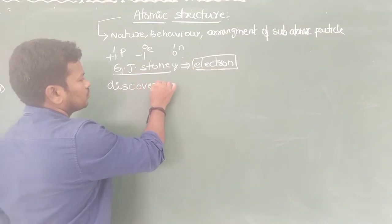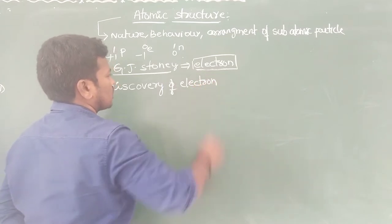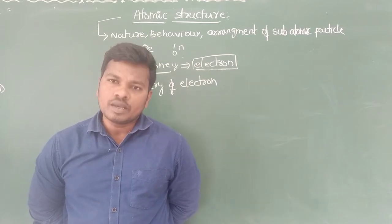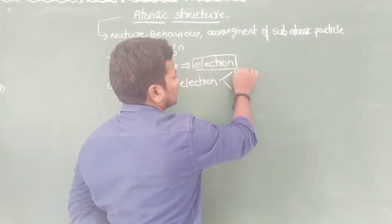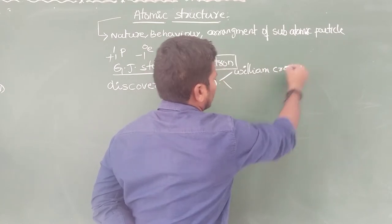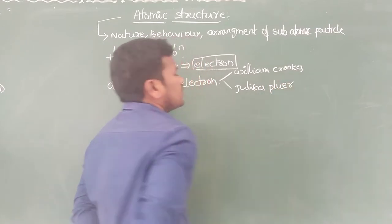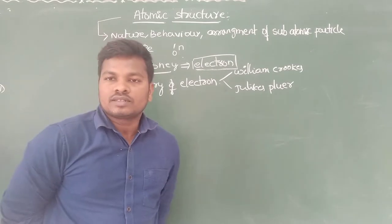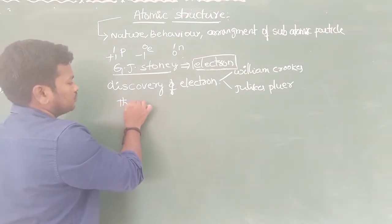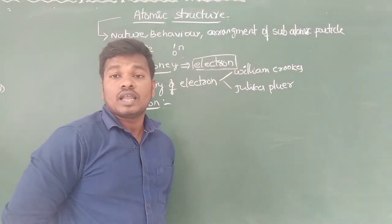The discovery of electrons was achieved with the help of the discharge tube experiment. The discharge tube experiment was first performed by scientists William Crookes and Julius Plucker. These two scientists performed the discharge tube experiment, meaning conduction of electricity through gases was first performed by William Crookes and Julius Plucker.